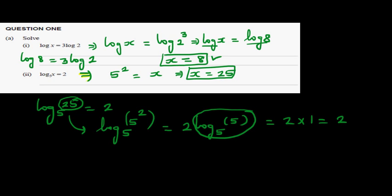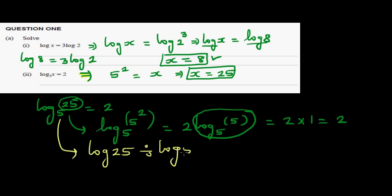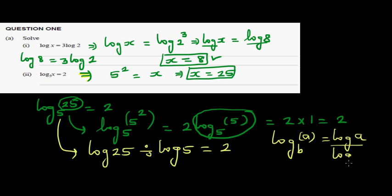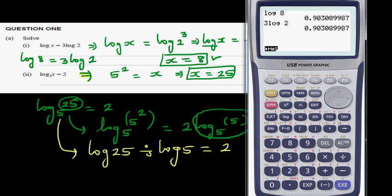Since log base 5 of 5 equals 1, that gives 2 times 1, which is 2. To confirm on a calculator, you enter log 25 divided by log 5. This uses the change of base rule: log base b of a equals log a divided by log b. Entering log 25 divided by log 5 gives 2.